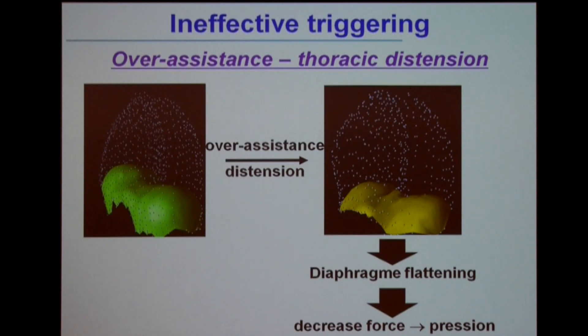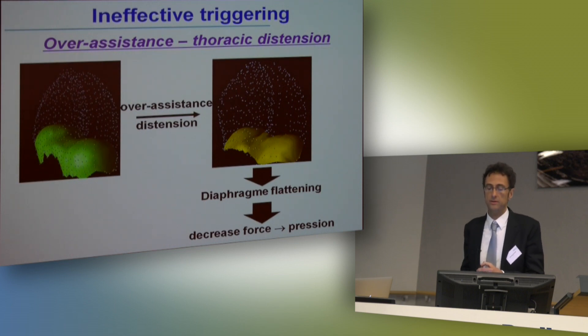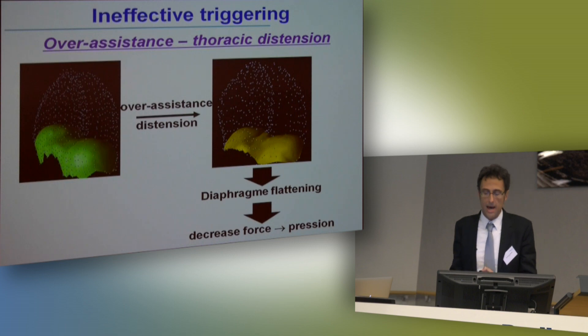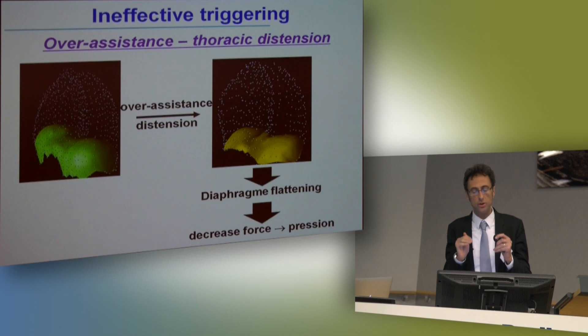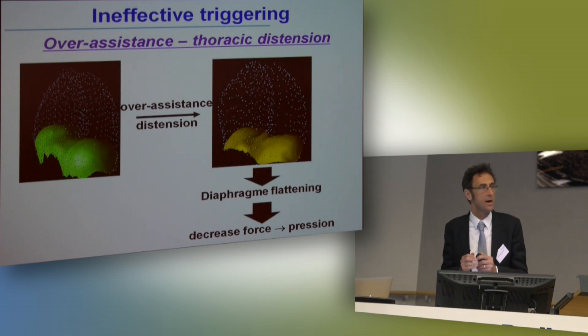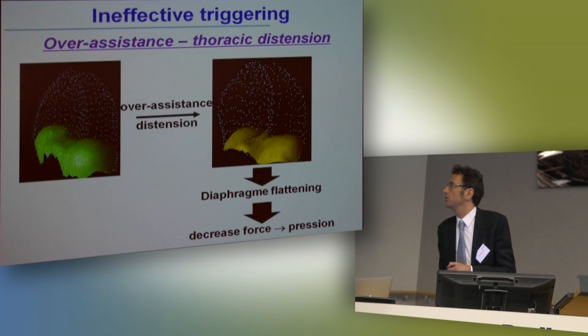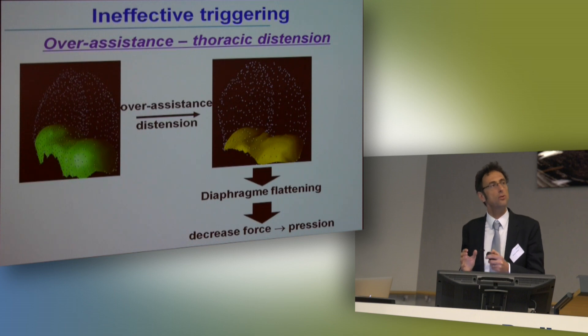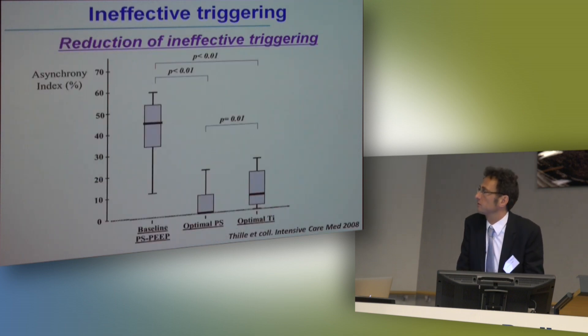What causes ineffective triggering? The main cause is overassistance. If the patient is overassisted — receiving more than needed — hyperinflation appears, which causes diaphragm flattening. This diaphragm flattening has a major consequence: it decreases the transformation of force into pressure. It is only a problem of the mechanical condition of the diaphragm, but the capacity of the diaphragm to generate pressure is lowered by overassistance. The main thing we can do to resynchronize the patient is to lower the level of assistance, which will deflate the patient.